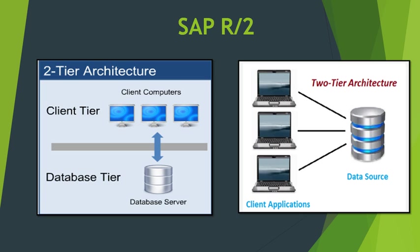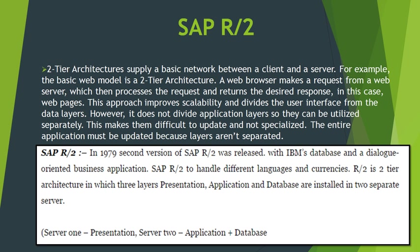SAP R2 was a mainframe-based business application software that was very successful in the 1980s and early 1990s. Released in 1979, SAP R2 used a two-tier architecture in which the three layers — presentation layer, application layer, and database layer — are installed on separate servers. Server one held the presentation layer, and server two held the application and database layer.